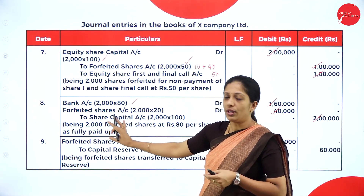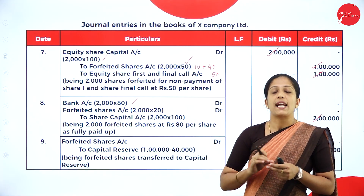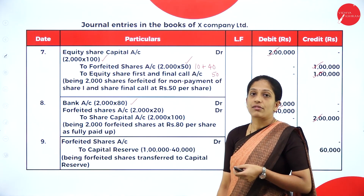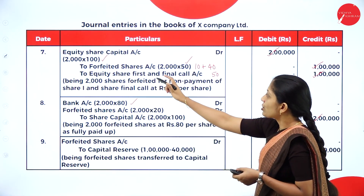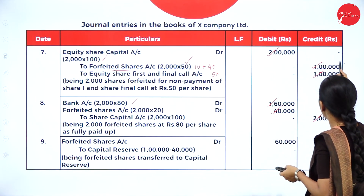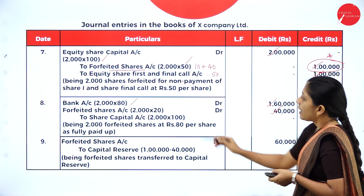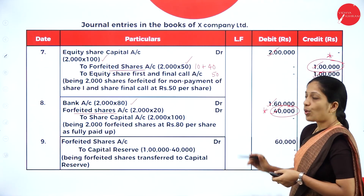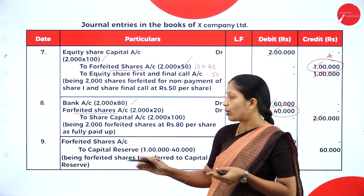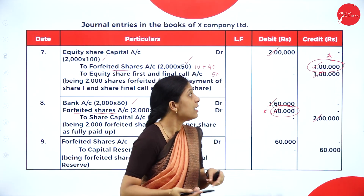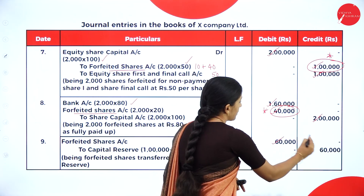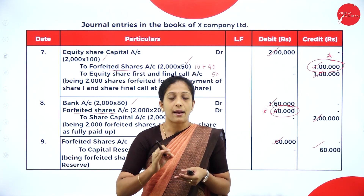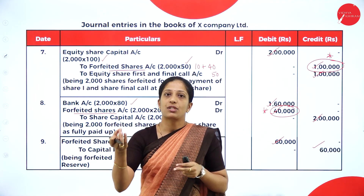The last entry transfers the balance in Forfeited Shares Account to Capital Reserve. From the 7th entry the forfeited shares account has ₹1,00,000; in the 8th entry ₹40,000 was debited to it. So ₹1,00,000 minus ₹40,000 = ₹60,000 is the balance. Entry: Forfeited Shares Account Dr. to Capital Reserve Account — ₹60,000. Narration: forfeited shares account transferred to capital reserve.